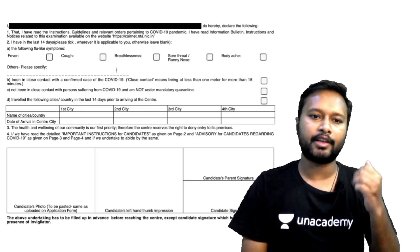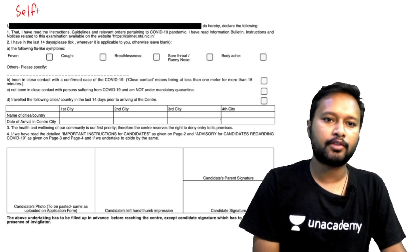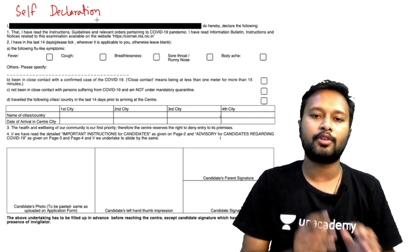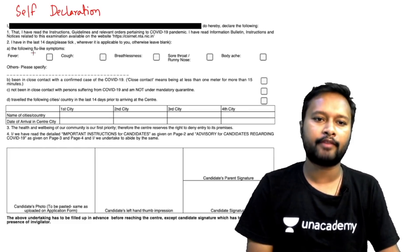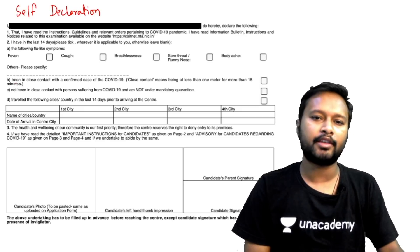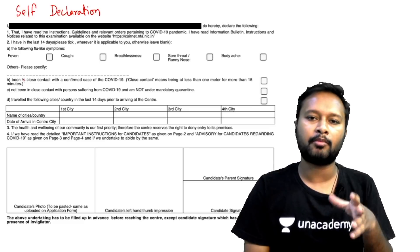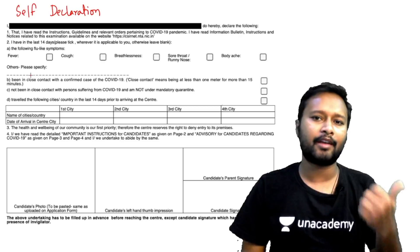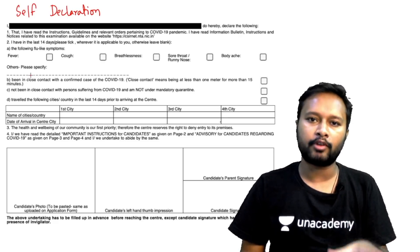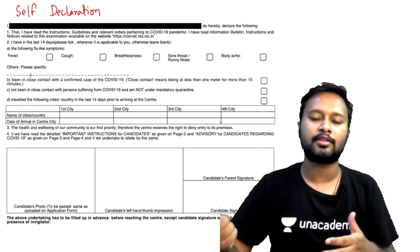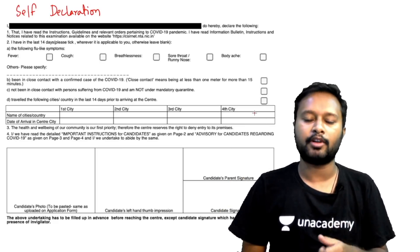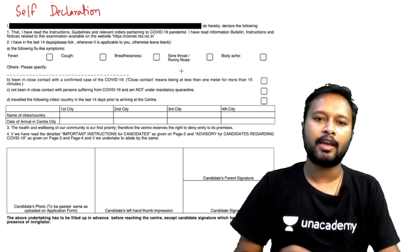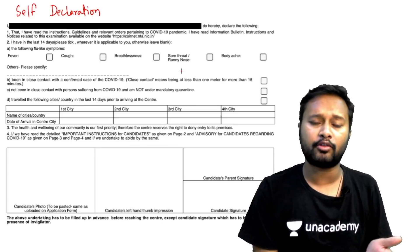When you look at the admit card, there is a section called the self-declaration section. In that section there are certain points — like whether you have certain symptoms or not — which you already filled while downloading your admit card. A dialogue box was there and you filled that form with yes or no. When you downloaded the admit card, whatever you did there was not printed on it. So you don't have to fill anything in that section — just leave it as it is, as it was done online already.